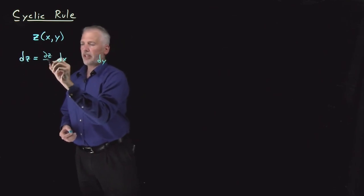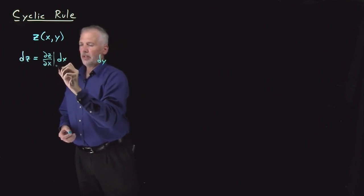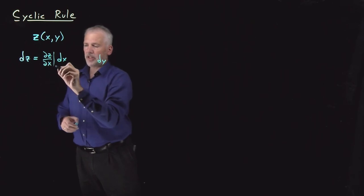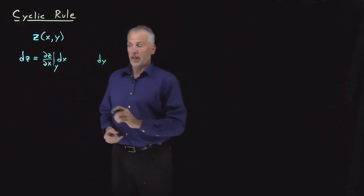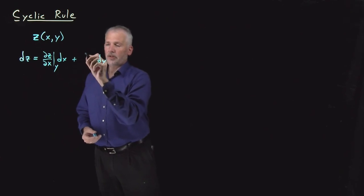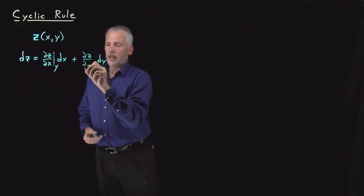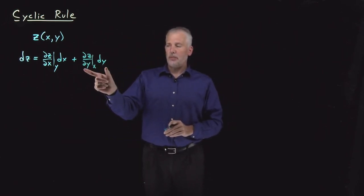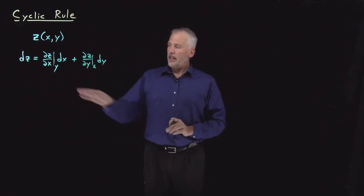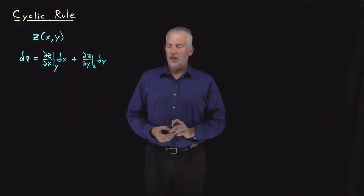There's going to be some change in z because x is changing. That's given by the rate of change of z as x changes without changing y. And there's also ∂z/∂y at constant x times dy. That's the response when I change y. That tells you how much z changes in response. That's the differential of z.